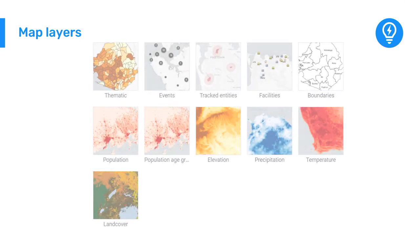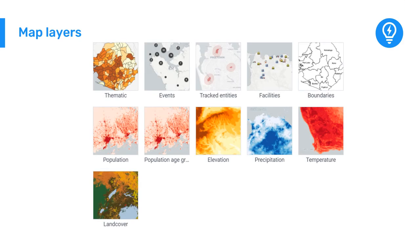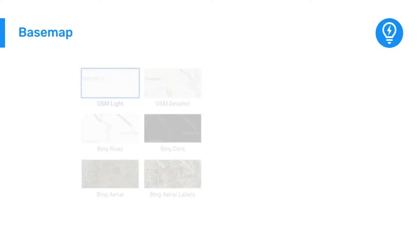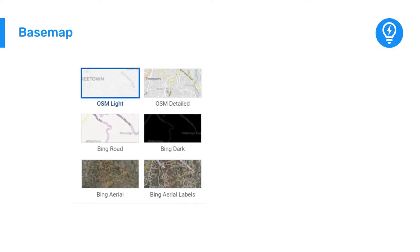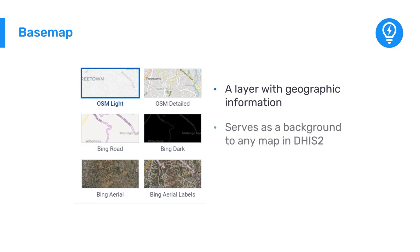Maps can include multiple layers, which each represent specific data geographically. Each map starts with a base layer or base map. A base map is a layer with geographic information that serves as a background to any map we create in DHIS-2.